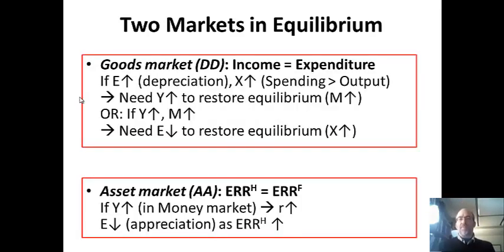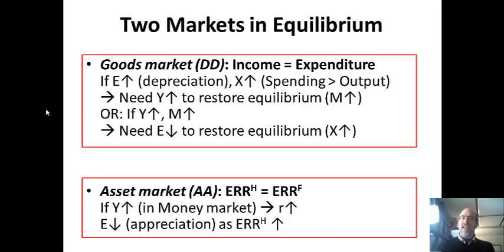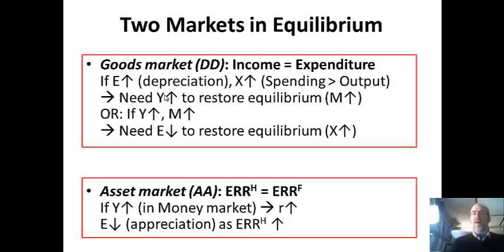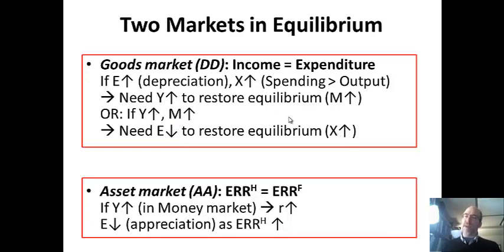How is equilibrium restored? Think of balancing: one side goes up, the other has to go up as well, or go back down. Holding a couple things equal, if the exchange rate goes up — remember that's a depreciation of the currency — exports will go up and spending will be greater than output. One way to get back to equilibrium is for income to go up, because income drives imports. So if E goes up, Y goes up to restore equilibrium. You can also go the other direction: if income goes up, imports go up, and then the exchange rate can depreciate to bring exports up, so X and M are back in balance.